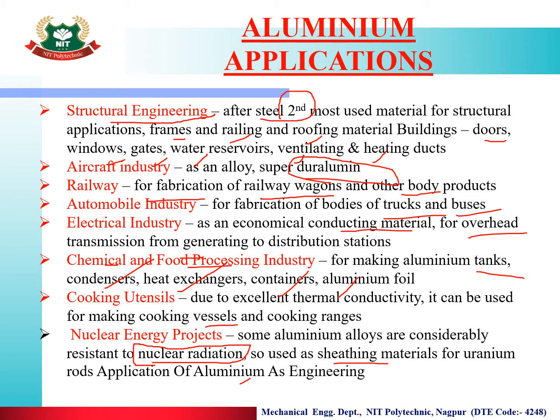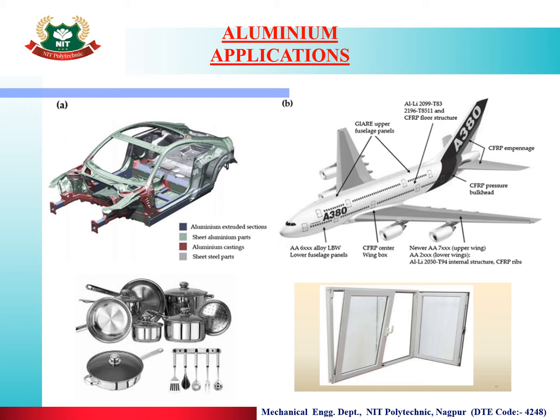These are the typical applications of aluminium. As seen in the pictures — automobile bodies, aircraft, household utensils, and windows — aluminium is an extremely important material for daily and industrial use.